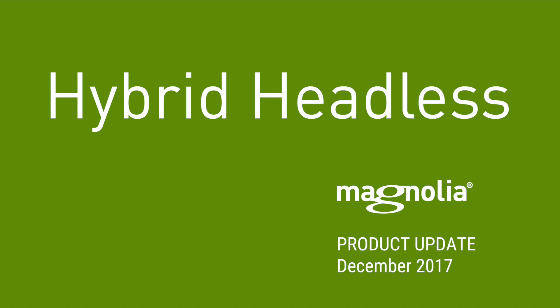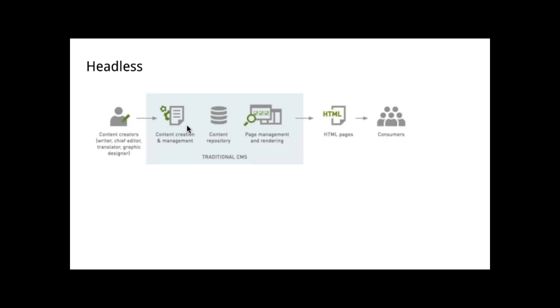We want to take a minute to speak about the mode we're running now called hybrid headless. In traditional use, you're putting content in, you've got your repository, and you've got your page management and rendering. The CMS itself is actually creating the end HTML that's being displayed to customers — you own the glass. So Magnolia is going right to the glass of the devices.